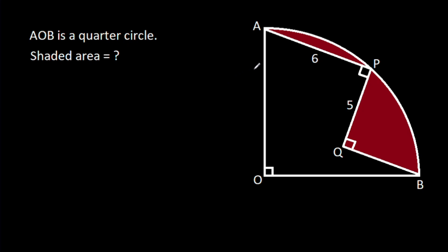In this video, we have been given that AOB is a quarter circle, angle APQ is 90 degrees, angle PQB is 90 degrees, AP is 6, and PQ is 5. We have to find the shaded area.